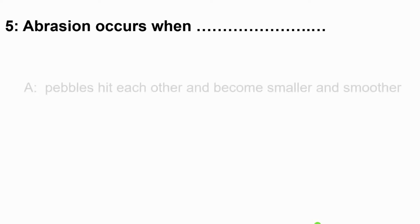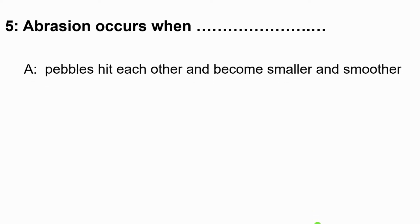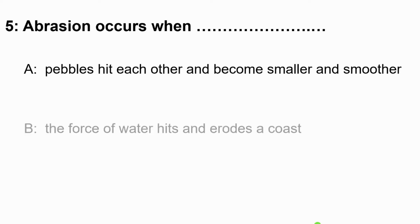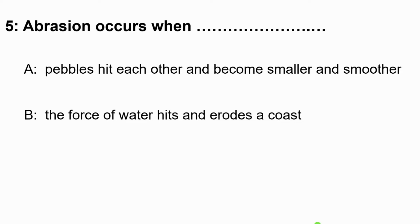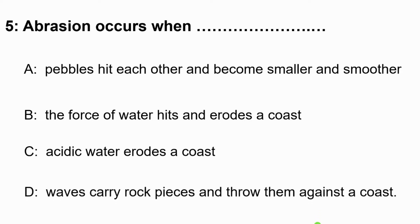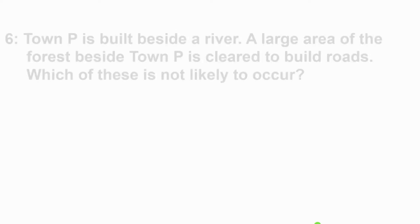Question 5: Abrasion occurs when dash. Abrasion is one of the causes of coastal erosion. Option A says pebbles hit each other and become smaller and smoother. B says the force of water hits and erodes a coast. C says acidic water erodes a coast. And D says waves carrying rock pieces and throw them against a coast. The correct answer is D: abrasion occurs when waves carry rock pieces and throw them against a coast.